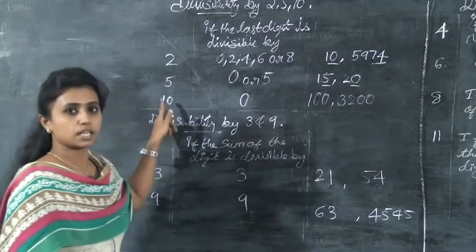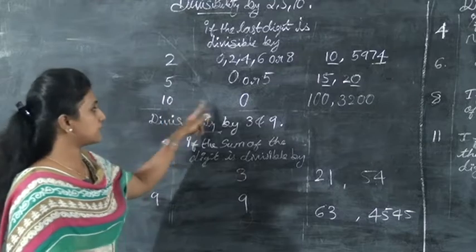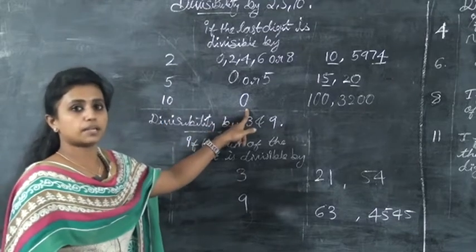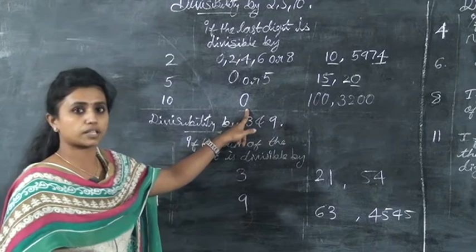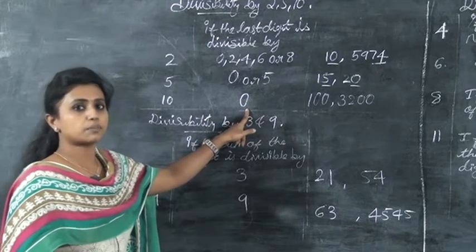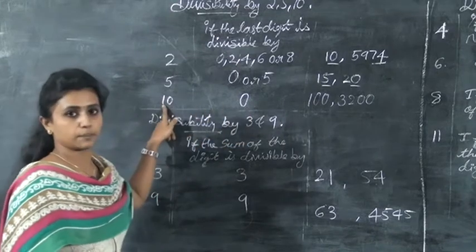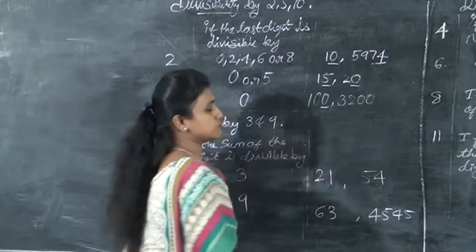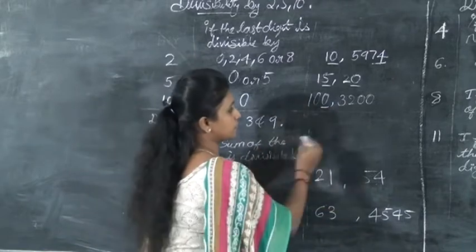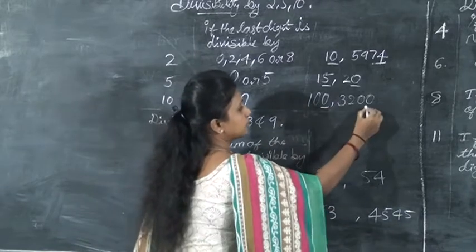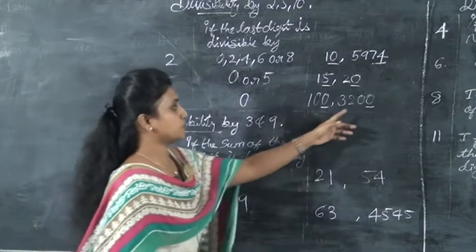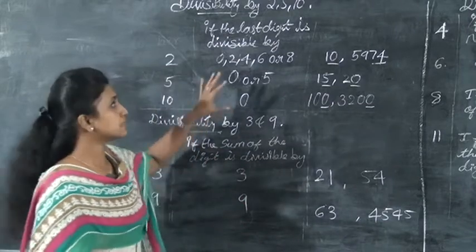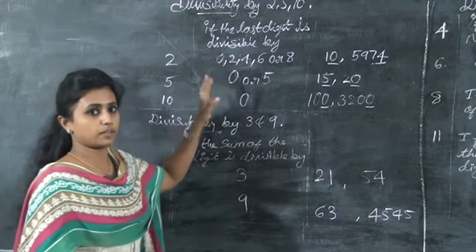Next is 10. A number is divisible by 10 if the last digit is 0. All numbers ending in 0 are divisible by 10. For example, 100: the last digit is 0, so 100 is divisible by 10. Similarly, 3200: the last digit is 0, so 3200 is divisible by 10. Clear, children? This is the first divisibility rule — for 2, 5, and 10.